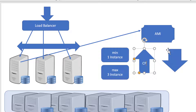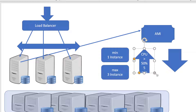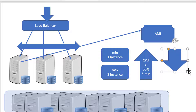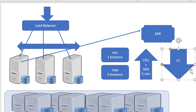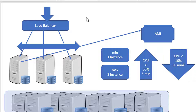I will say whenever the CPU utilization is greater than 50% for five minutes, the number of instances should go up by one, with a maximum of three instances. And it should scale down when the CPU utilization is less than 10% for 30 minutes. Continuously for 30 minutes if the CPU utilization is less than 10%, I will terminate one instance. This way, the number of instances can get increased based on load, and whenever there is no load, it would reduce cost. This is what we call scalability.